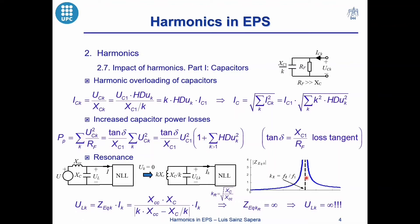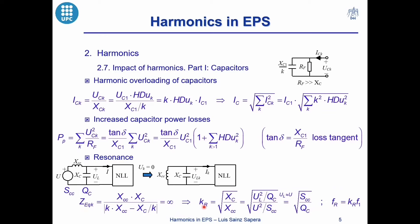At this harmonic the values of the harmonic voltages are also infinite. We have a parallel resonance phenomenon at this harmonic, which is related to a maximum of the equivalent impedance and may produce high values of the harmonic voltages. These high values may increase the harmonic overloading and power losses of the capacitors. The harmonic order of this resonance can also be calculated from the short-circuit power of the grid and the reactive power of the capacitor bank, and the resonance frequency can be determined from this harmonic and the fundamental frequency of the installation.